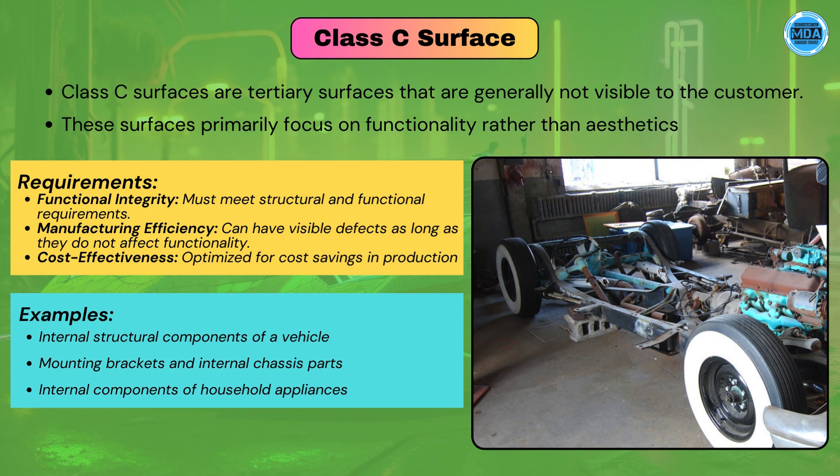An example of Class C surfaces is the internal structural components of a vehicle. Those components are generally not visible to the customer, but you can see those parts while servicing the product. While servicing only you can see those parts, so those parts are called Class C surfaces.